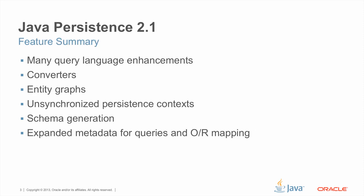These are some of the new features I'll be discussing in this session. We've added many query language enhancements, support for type converters, an entity graph API for use in finder and query operations, support for unsynchronized persistence contexts, which are useful in the modeling of conversations, support for standardized schema generation, and expanded metadata for queries and object relational mapping.